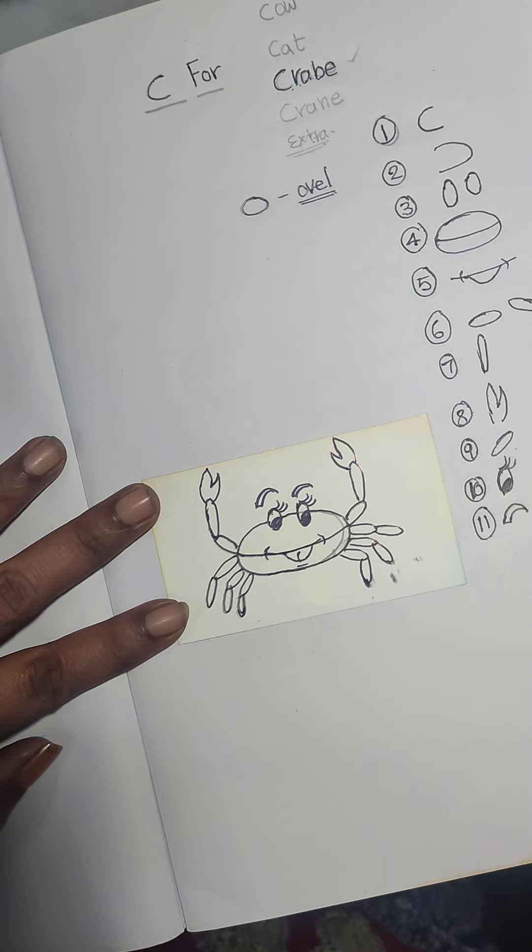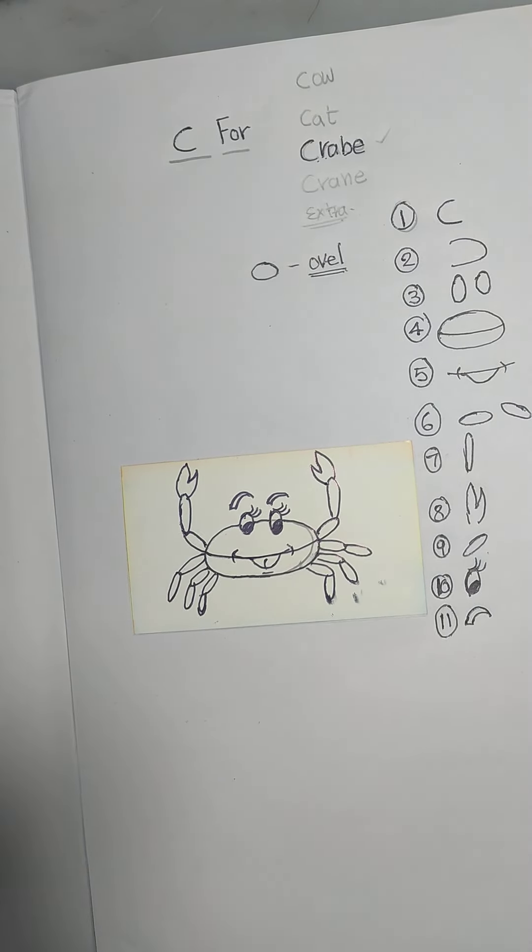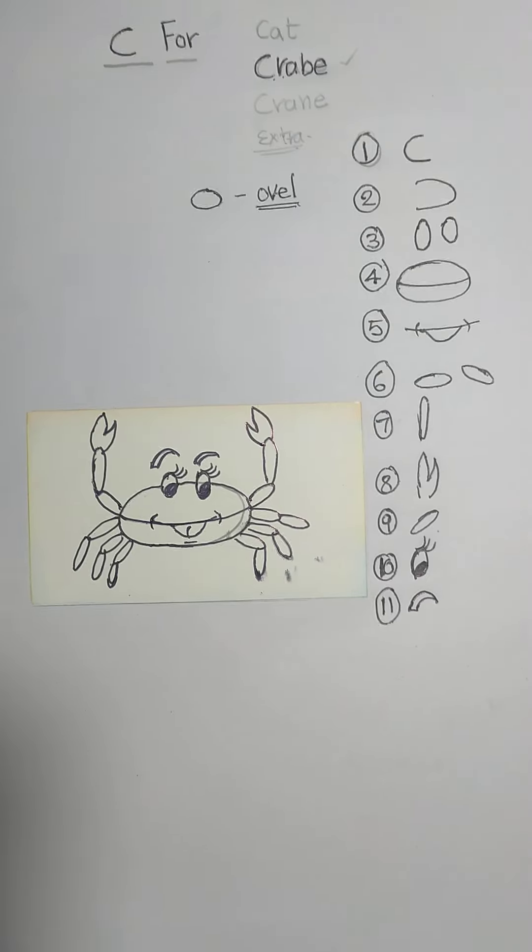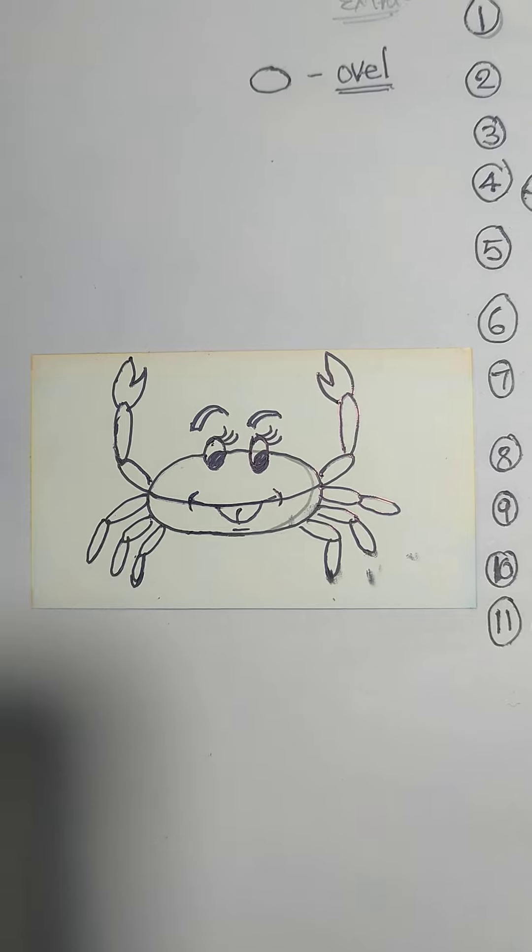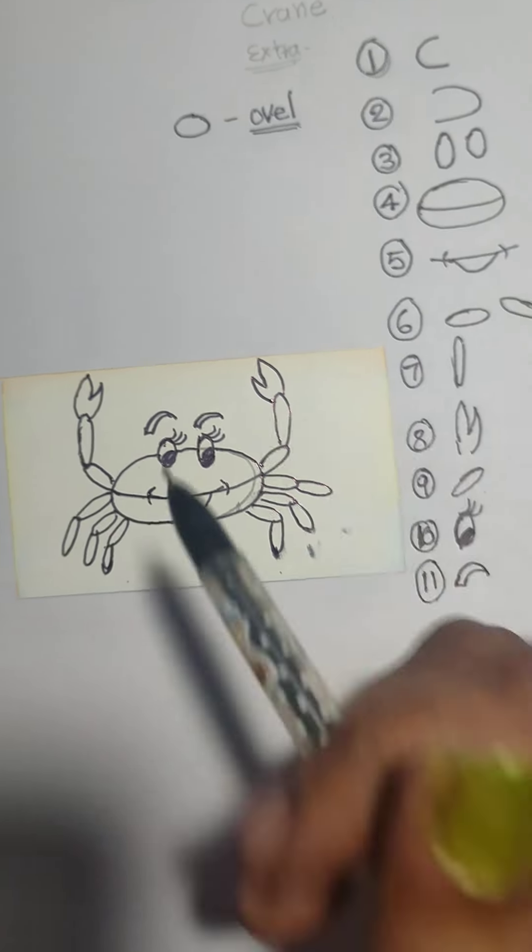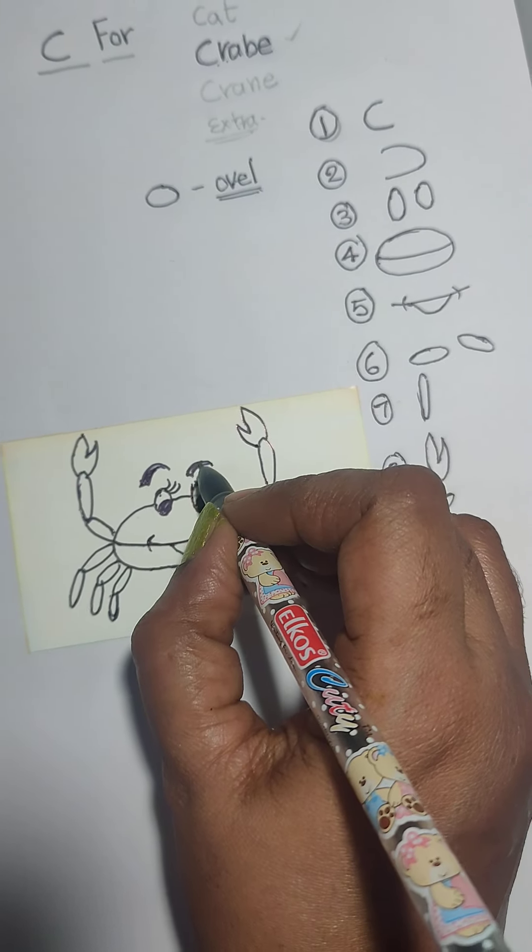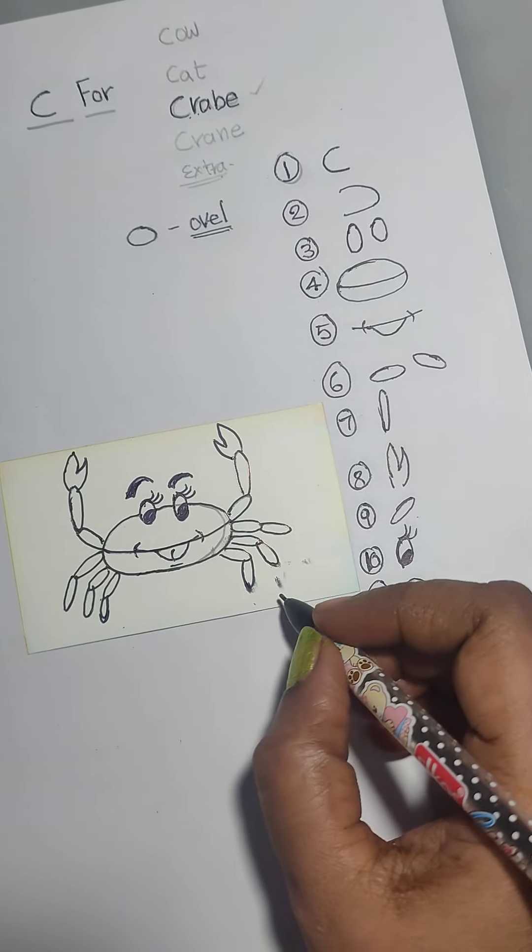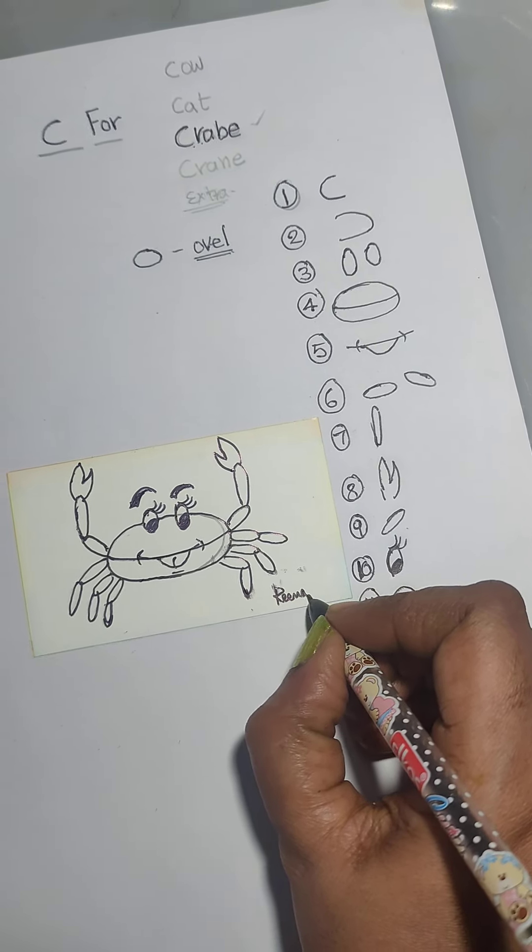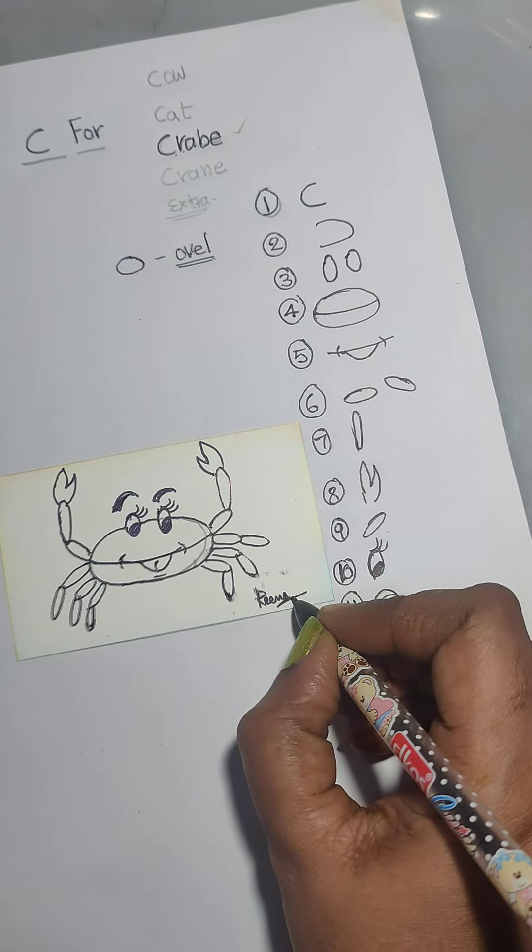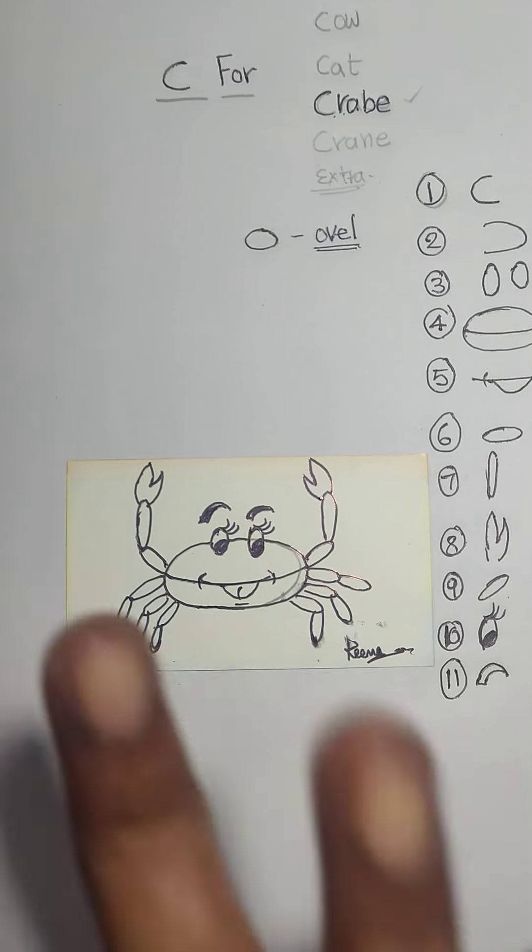Then tomorrow we will make coloring of this crab. Okay children. Black we will take. Bye. It's my small little crab. Fine. Bye bye.